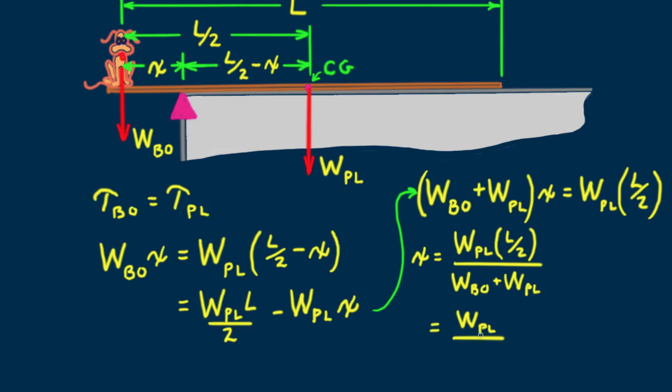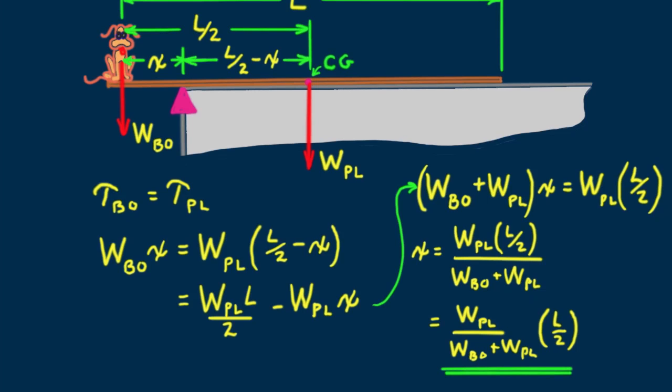A distance equal to the plank's weight divided by the sum of the two weights times L over 2. Beyond this distance, toppling occurs.